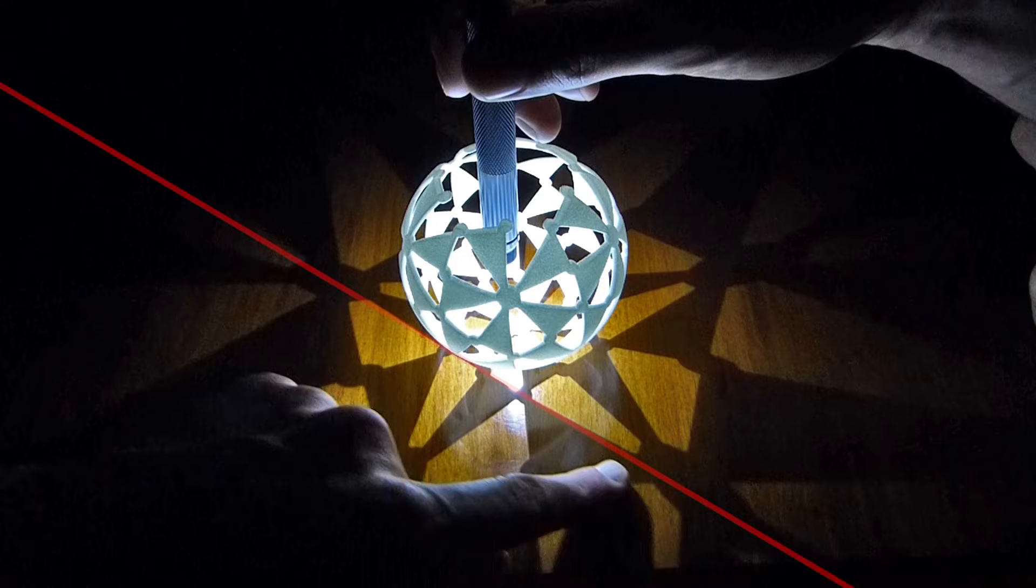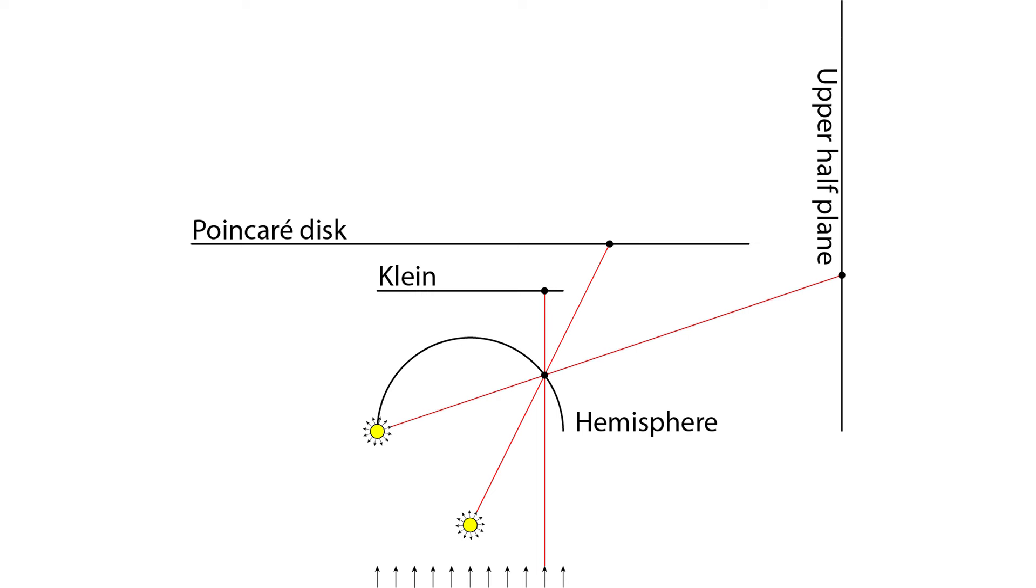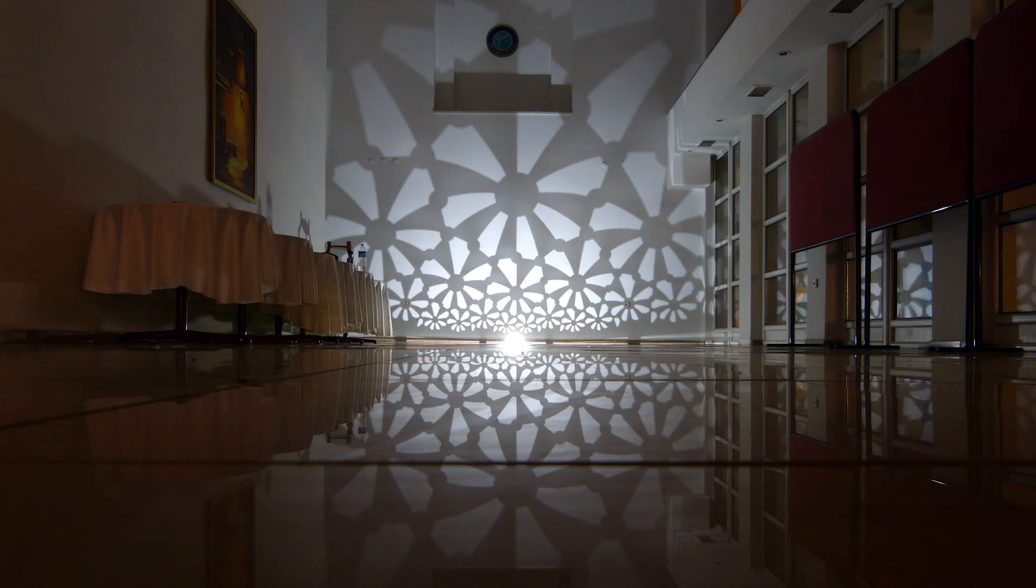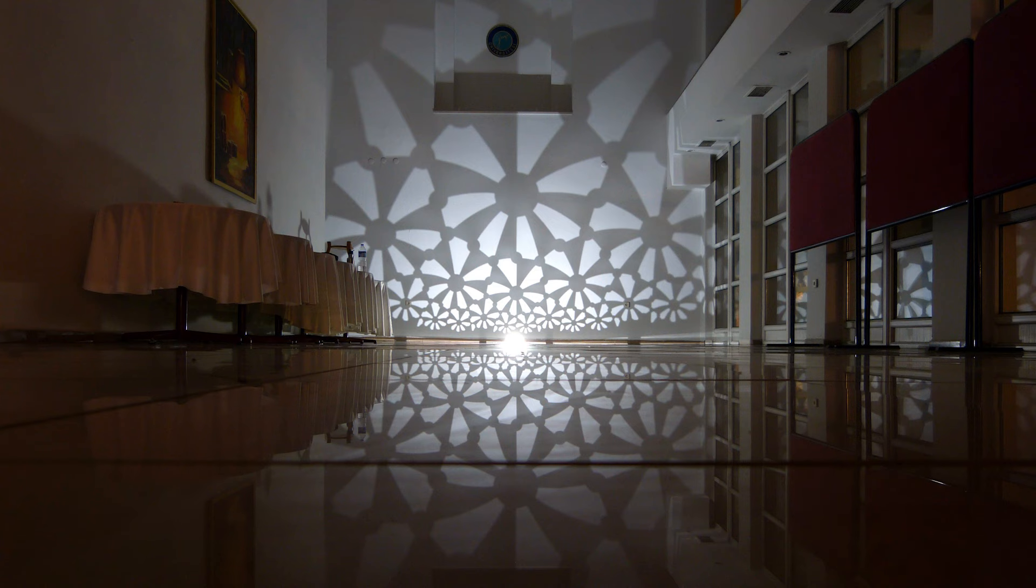Here's a version of a diagram from a paper of Cannon, Floyd, Kenyon, and Perry. It shows how the four models are related by stereographic and by orthogonal projections. Thanks for watching!